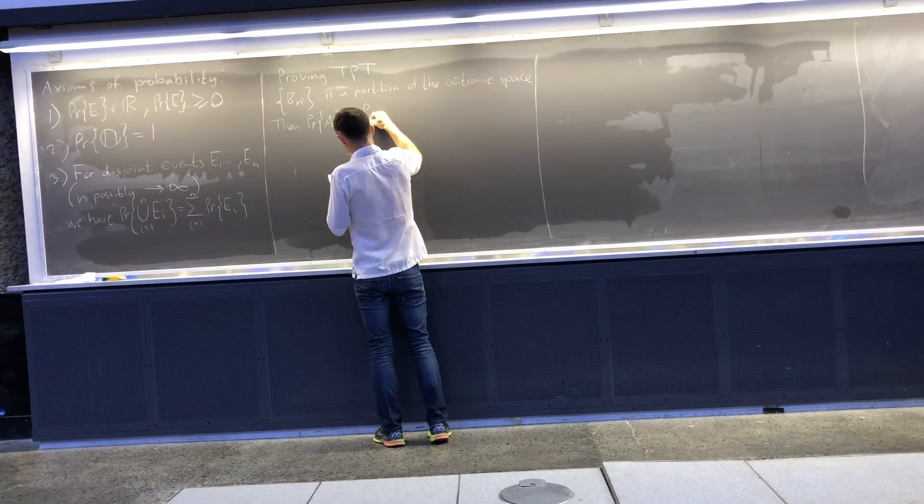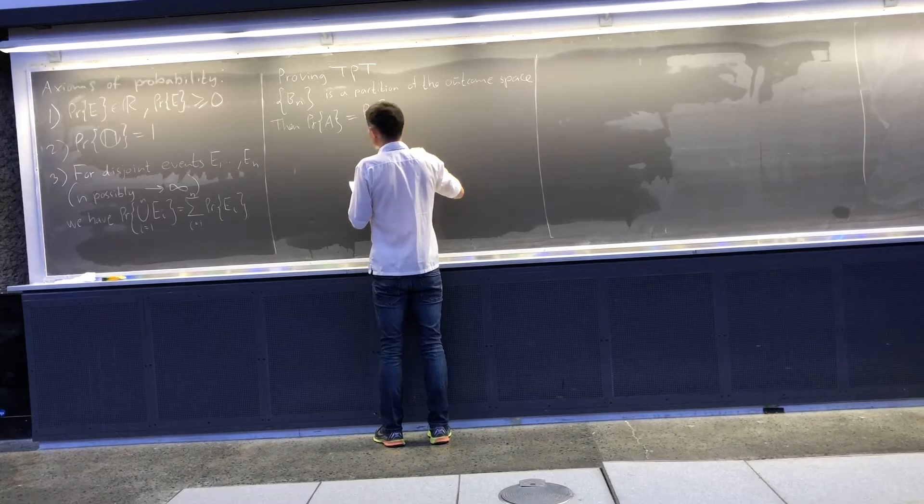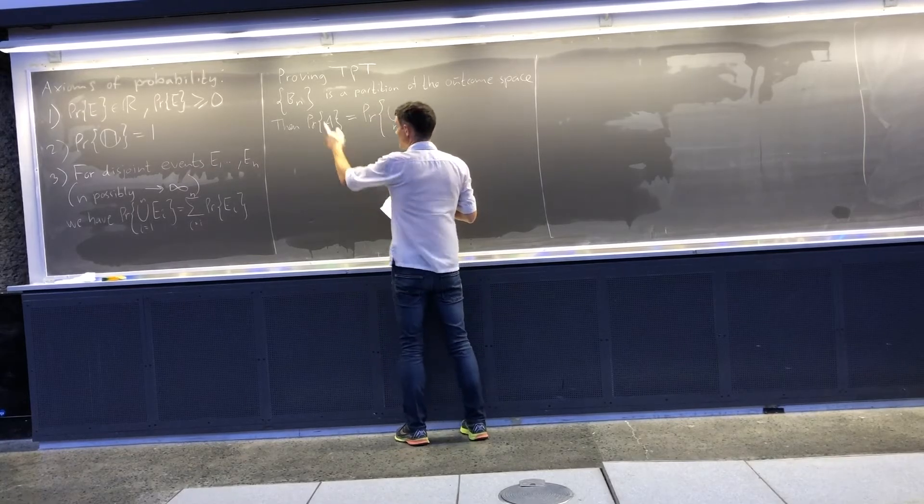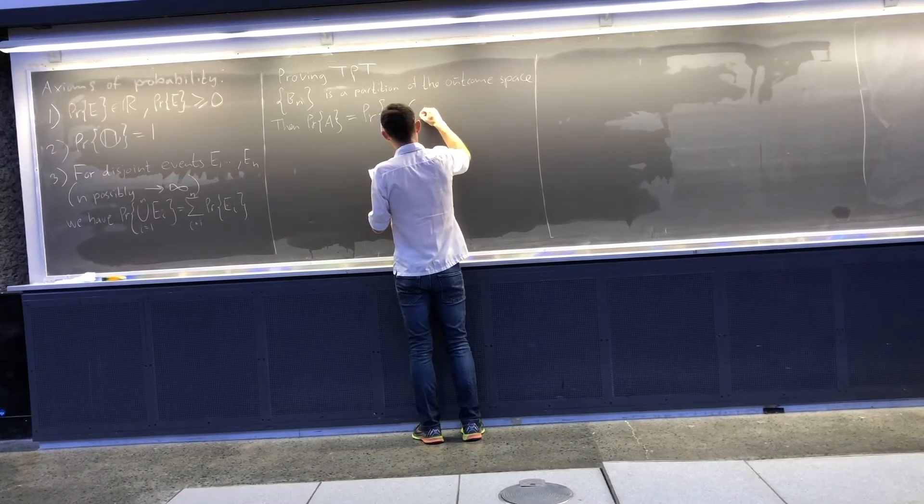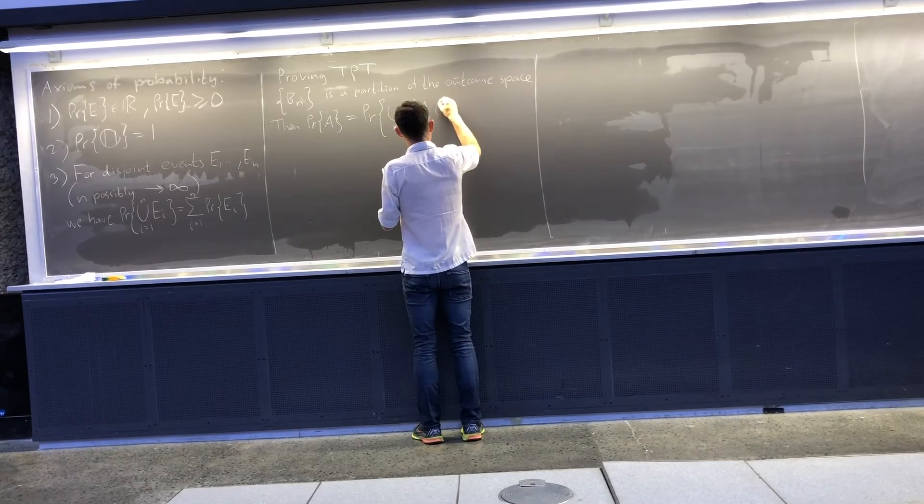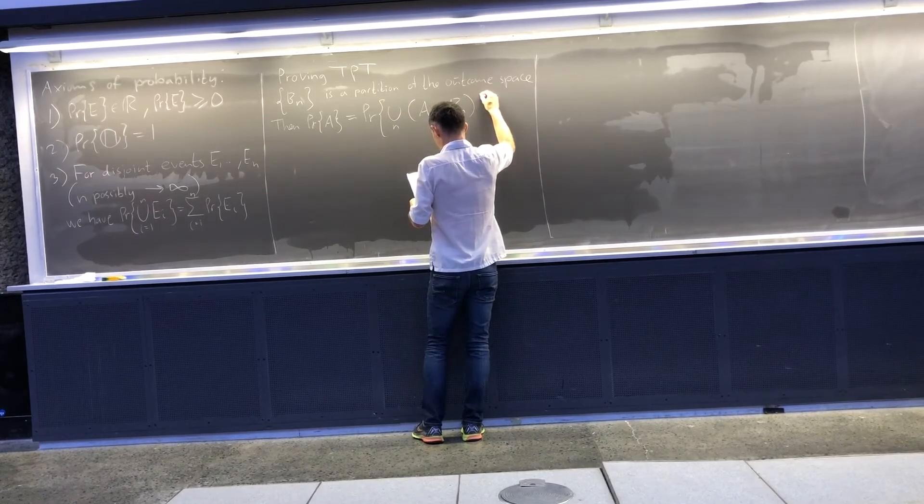My first claim is that this is the same as the probability of the union over n. n are the index of the Bn's. This is a union of intersections between A and Bn.